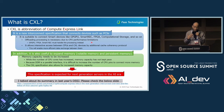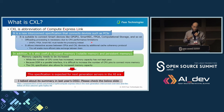Memory capacity needs to be increased. While the number of CPU cores has increased, memory capacity has not kept pace. Because DDR is a parallel interface, it's difficult to increase the number of CPU pins to connect more memory. The CXL specification also allows for increased memory capacity, and this specification is expected for next-generation servers in the AI era.